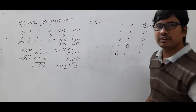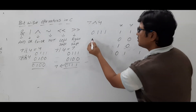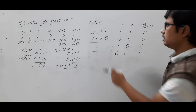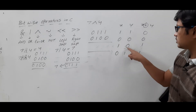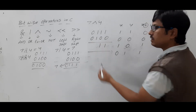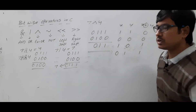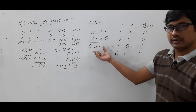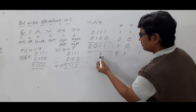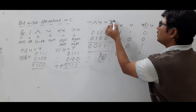Now performing 7 XOR 4: 7 is 0111 and 4 is 0100. Bit by bit: 1 XOR 0 = 1, 1 XOR 0 = 1, 1 XOR 1 = 0, 0 XOR 0 = 0. Converting this binary number to decimal gives 3. So 7 exclusive OR 4 equals 3.